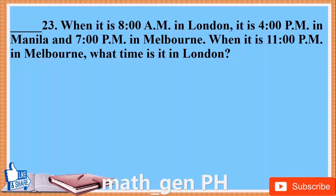Number 23. When it is 8 AM in London, it is 4 PM in Manila and 7 PM in Melbourne. When it is 11 PM in Melbourne, what time is it in London?